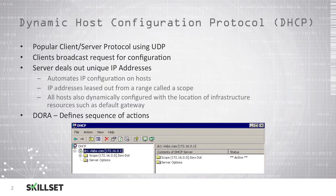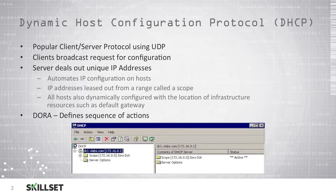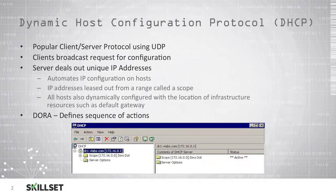IP addresses are leased out from a range, which is referred to as a scope. All of the hosts that successfully join using DHCP will be automatically configured with the location of important resources, such as the default gateway.